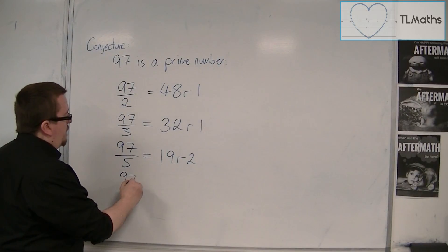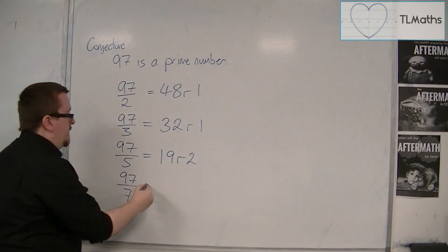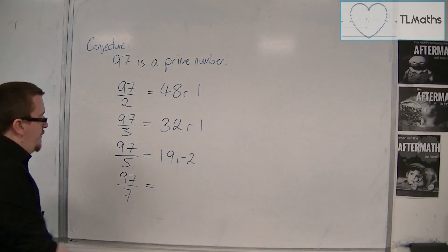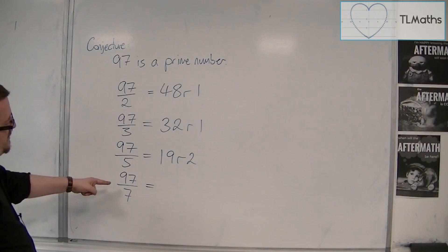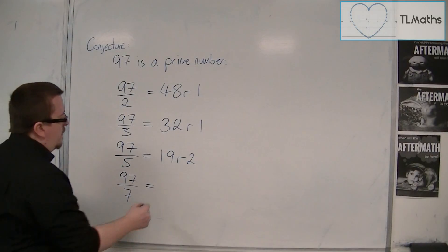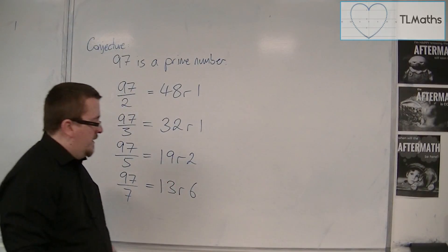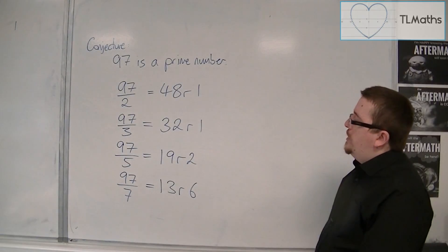So the next one I'd try is 7. Notice how I'm using dividing by prime numbers here. That kind of saves time. Now, 97 divided by 7. Well, 70, then 21 to 13 remainder 6. So 7 doesn't work either. Now, how far do I need to go? Do I need to go any further than this?